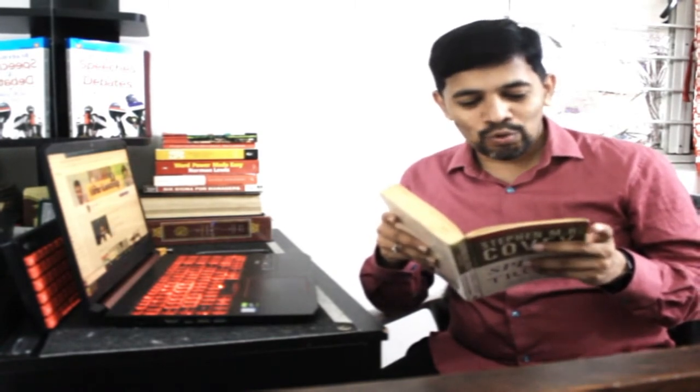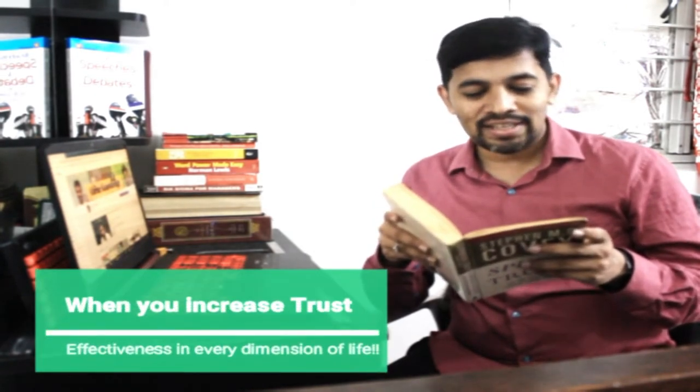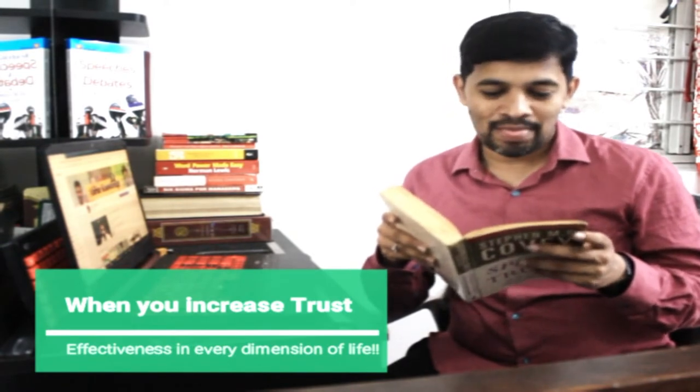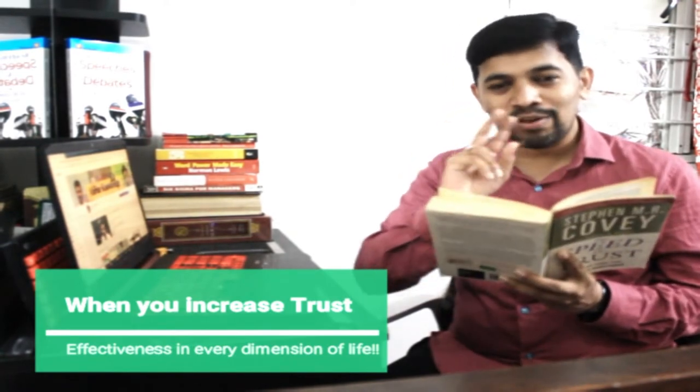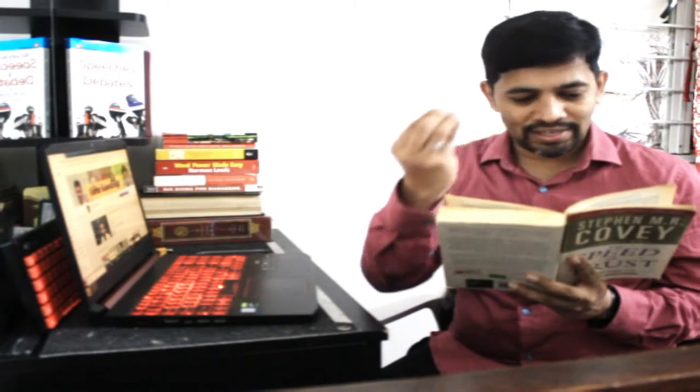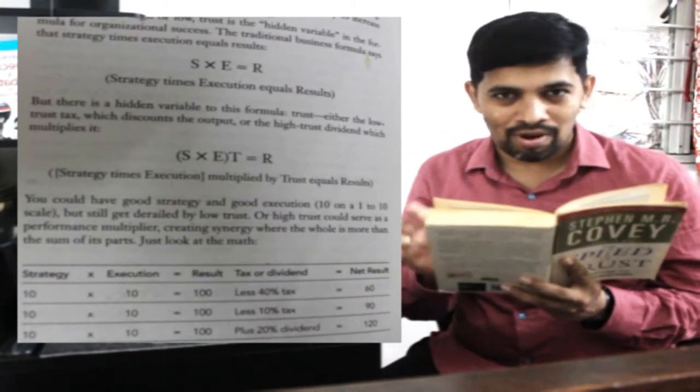And in this, the last point says that when you increase that trust, the effectiveness - what will happen is the ability to increase the effectiveness in every dimension of life. And then it has given one formula called the traditional business formula: when you have strategy times execution, you will get a better result, right? These are traditional formulas.